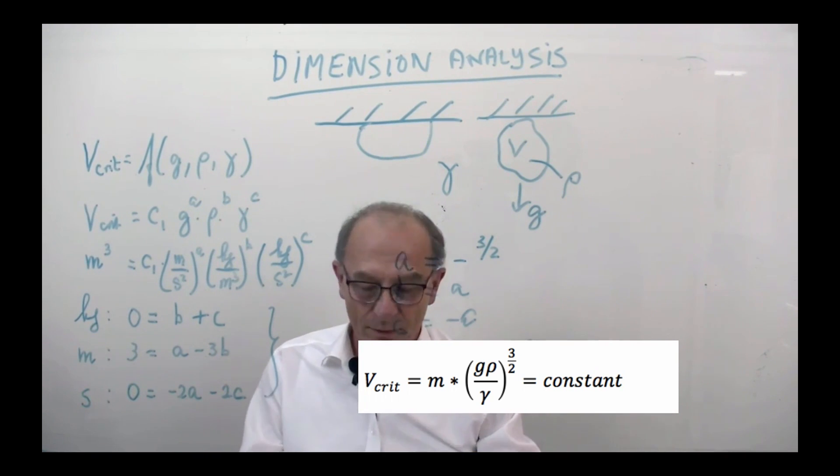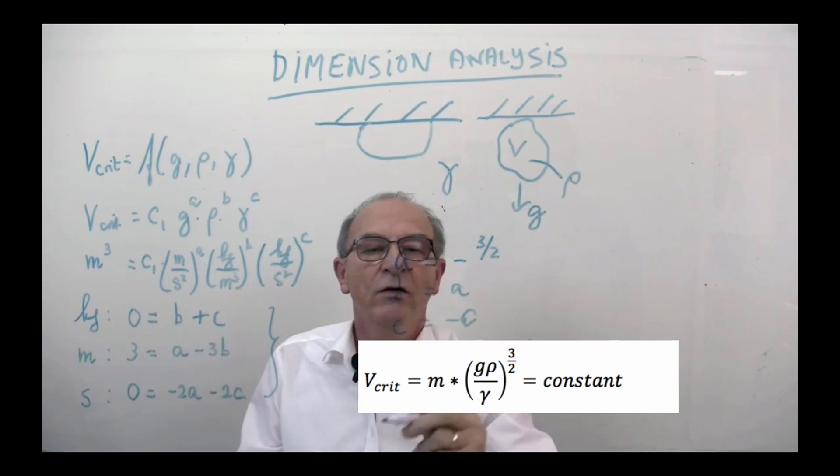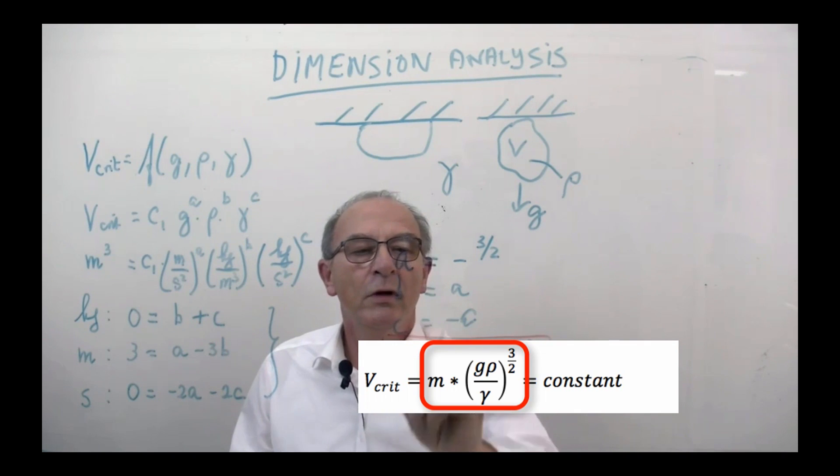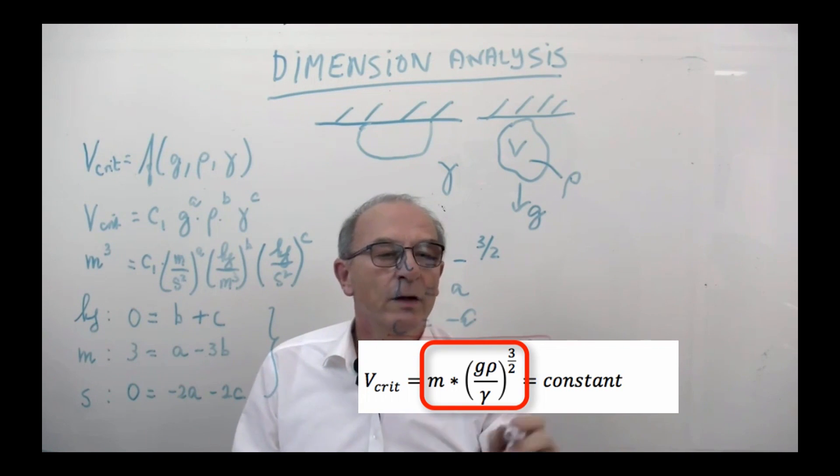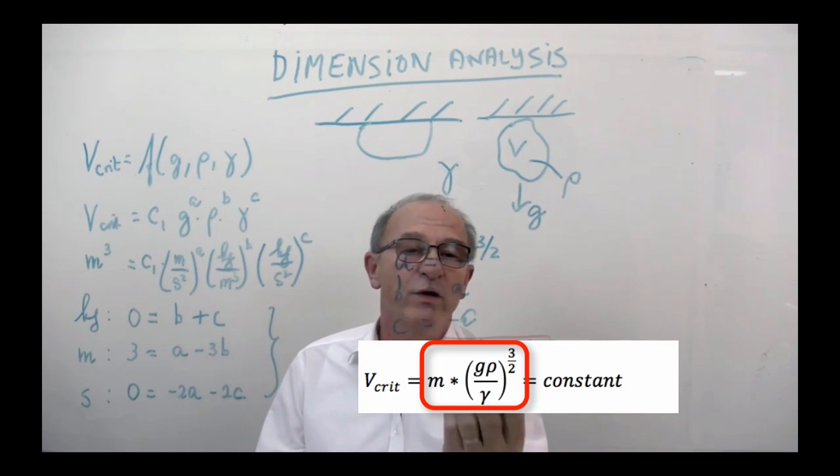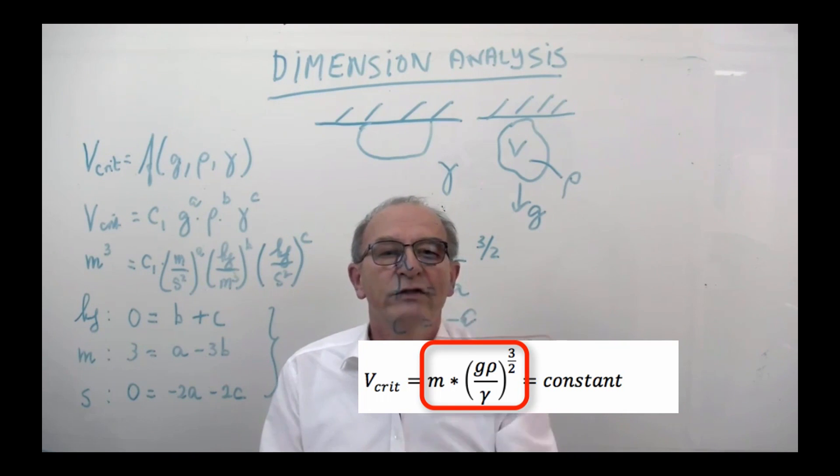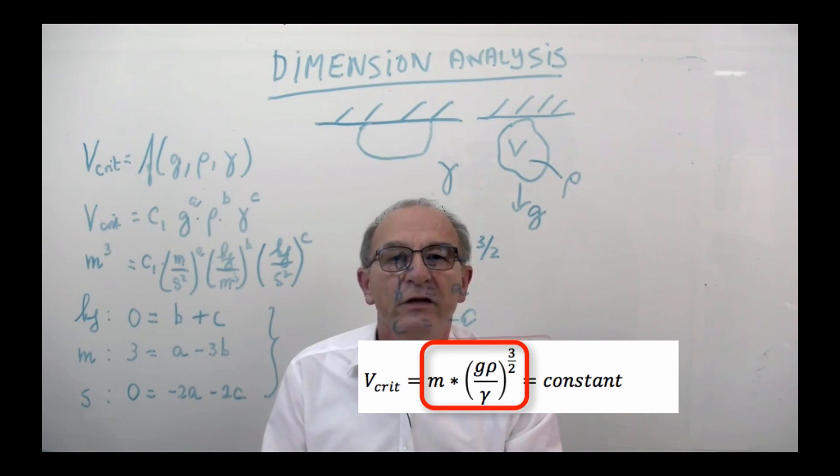I have now made a fast step, but what you see here, this is a dimensionless group, which is constant. And this is, in principle, the principle of dimension analysis. Now we have one group, but normally we have many other groups, like Sherwood numbers, Nusselt numbers, et cetera. Try to work out this example, and try to get the feeling about dimension analysis. Thanks for looking at this movie.